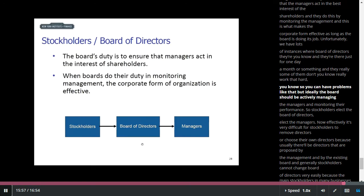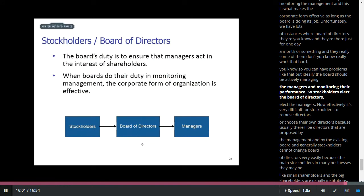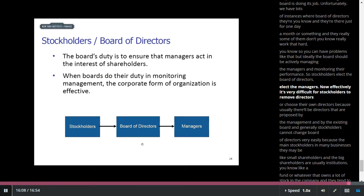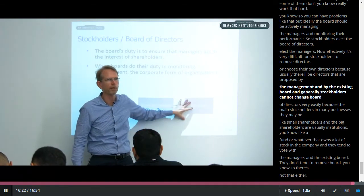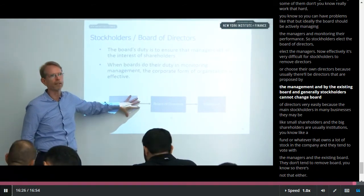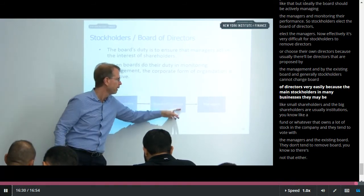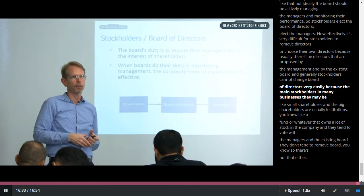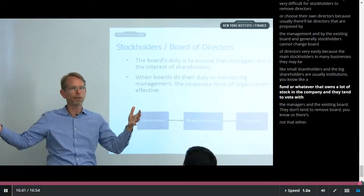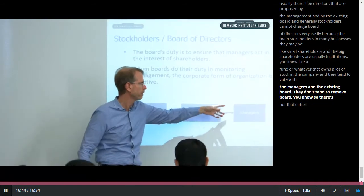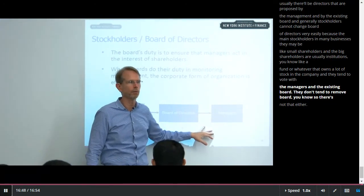Ideally, the board should be actively managing and monitoring the managers' performance. So it goes: stockholders, collective board of directors, collective managers. Now, effectively it's very difficult for stockholders to remove directors or choose their own directors, because usually directors are proposed by the management and the existing board, and generally stockholders cannot change that very easily. The main stockholders in many businesses may be small shareholders, and the big shareholders are usually institutions — like a fund that owns a lot of stock in the company — and they tend to vote with the managers and the existing board.